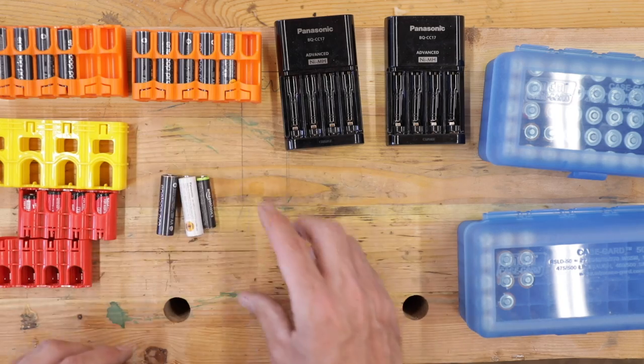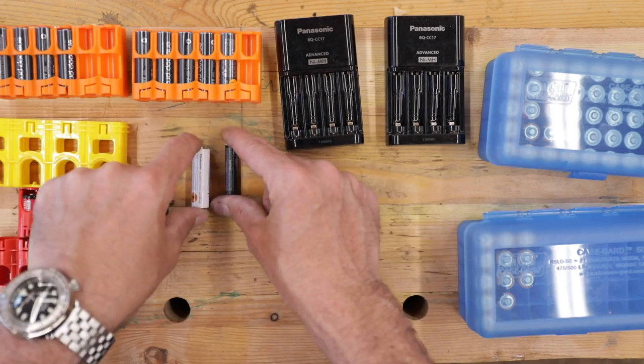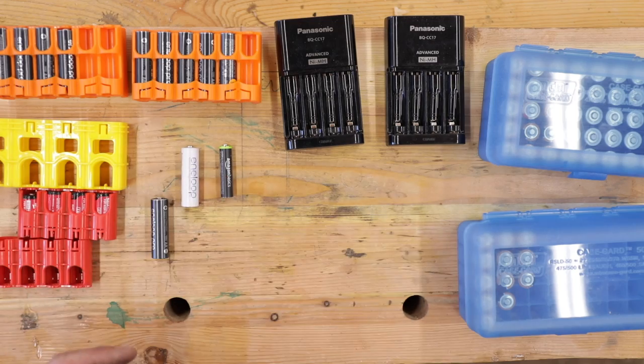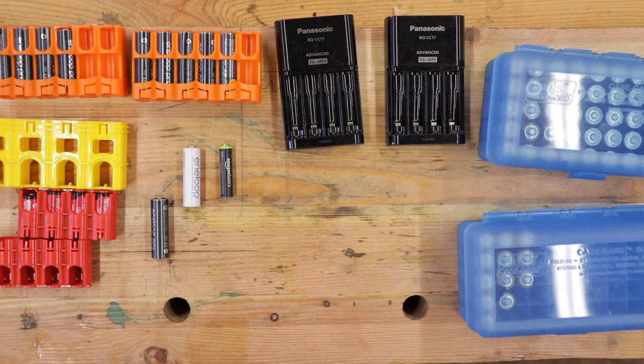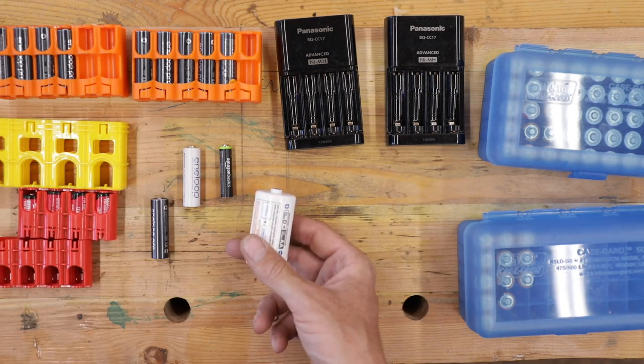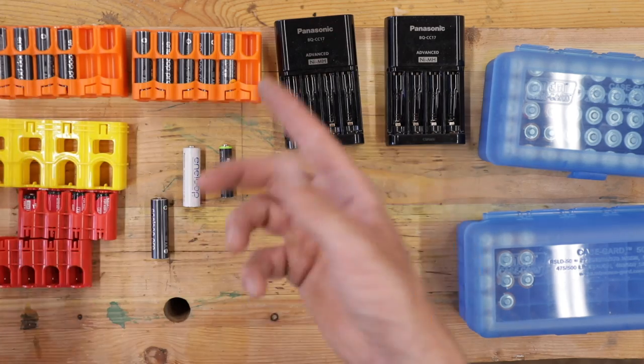So once you get your batteries, now you're set. You've got your AAA and your AA rechargeables, and you can run pretty much anything you want to do. You can run your big Ds, you can run your Cs, and you're good.